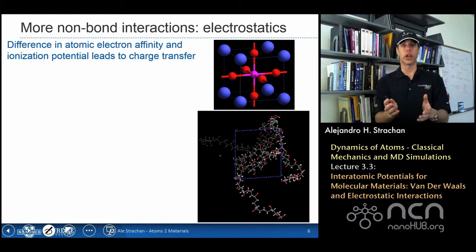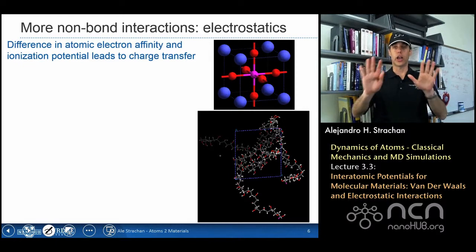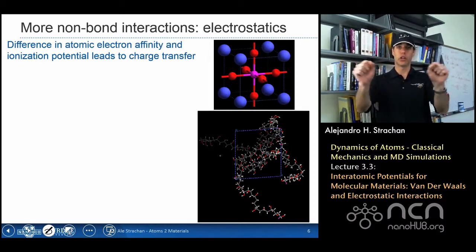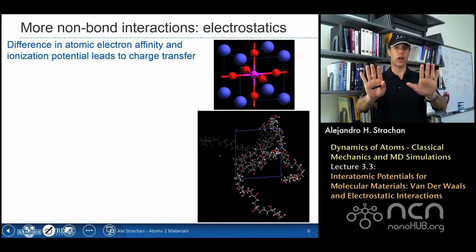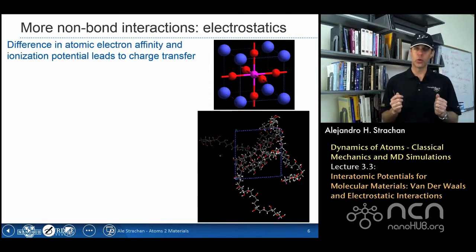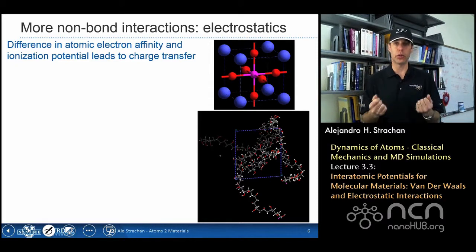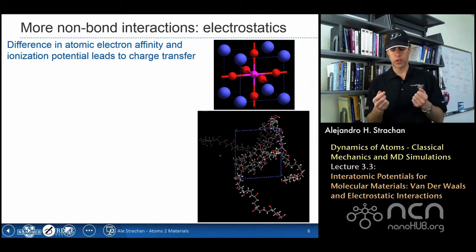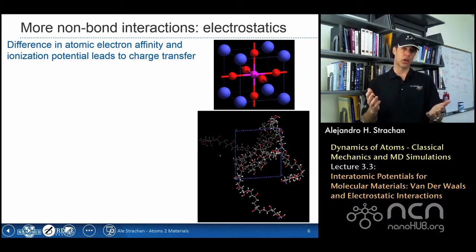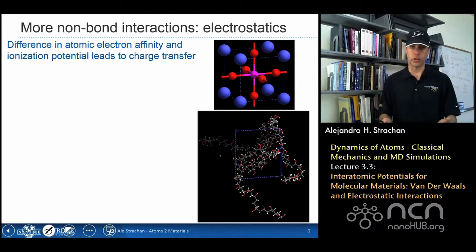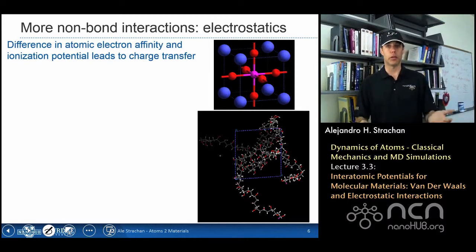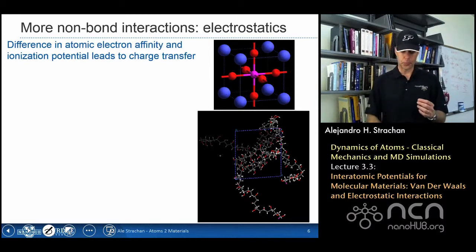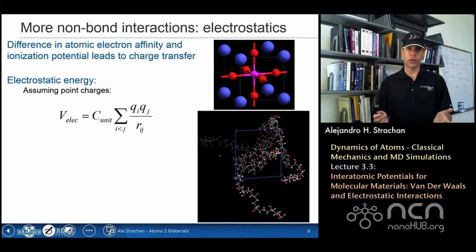We know from our treatment of quantum mechanics, and you guys have done a homework assignment on this, that when I have a heteropolar bond, when I bring two different atoms together, I can have charge transfer between the two, and what I end up with is with a bond that's partially covalent and partially ionic. So differences in electronegativities between atoms lead to partial transfer of charge, and consequently the atoms are partially charged, and that plays a significant role in the bonding of many polymers, and also in ceramics, like that perovskite.